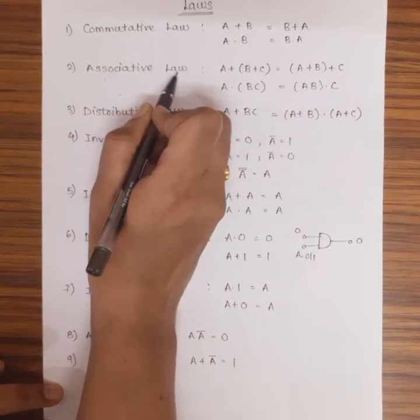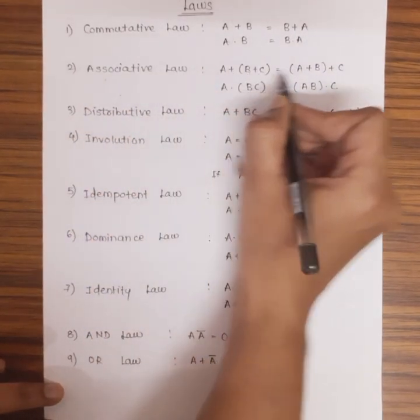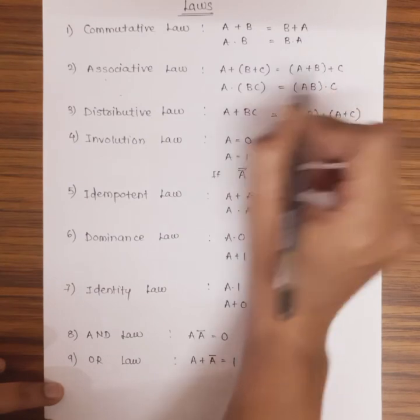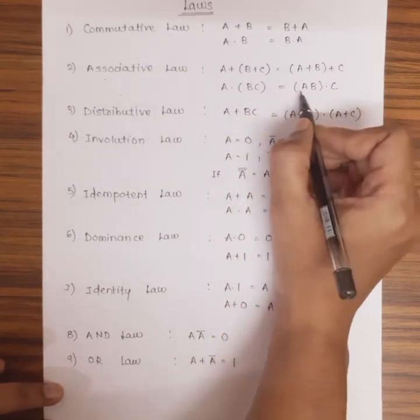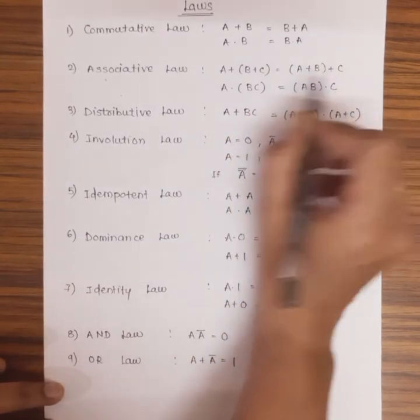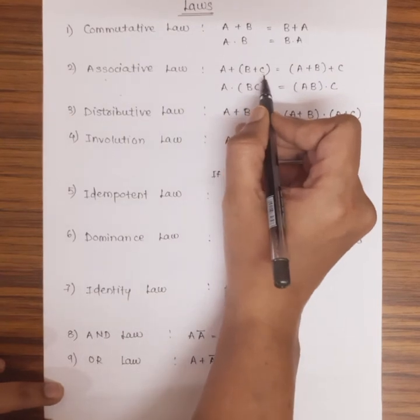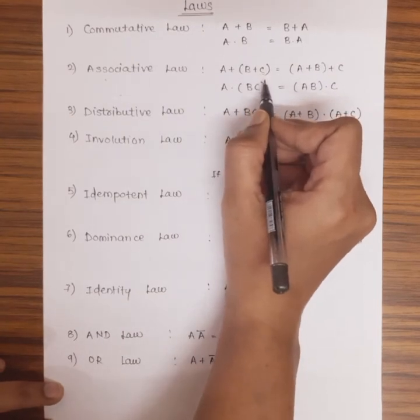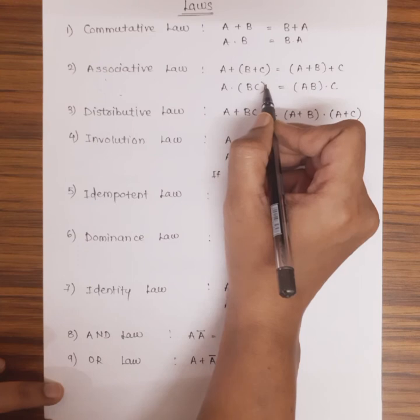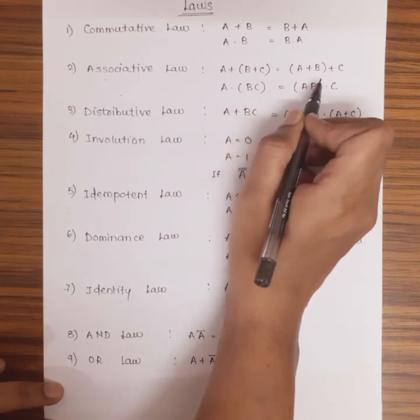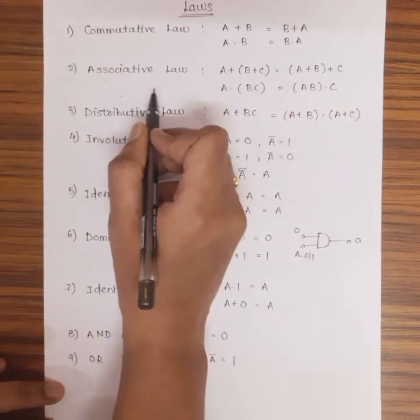Next one is the associative law: A + (B + C) = (A + B) + C, and A · (B · C) = (A · B) · C. The parenthesis operation gets performed first, but even though if the parenthesis is rearranged, the final result remains the same. This is what the associative law states.